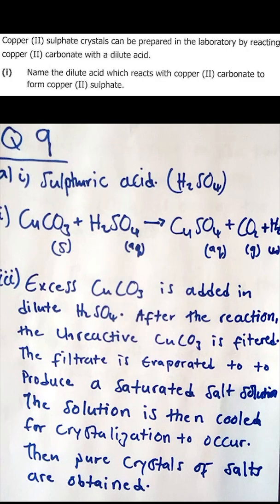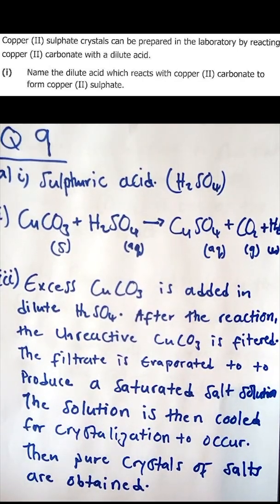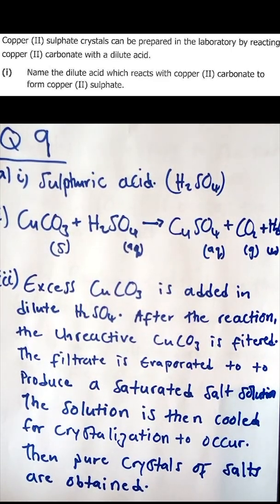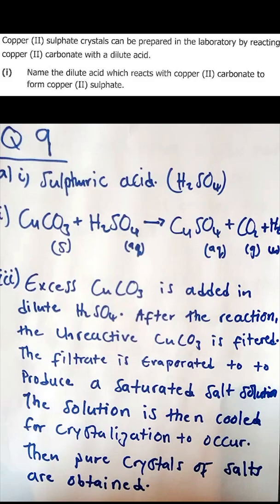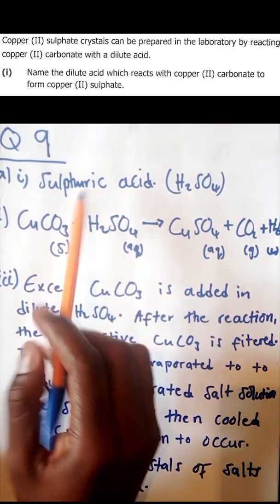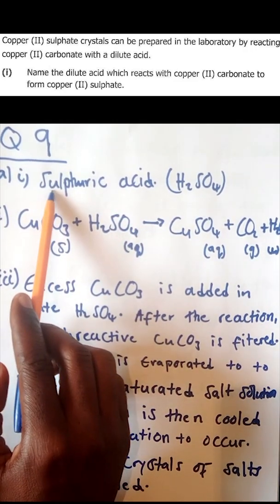Question nine is about the formation of sulfuric acid. Copper(II) sulfate crystals can be prepared in the laboratory by reacting copper(II) carbonate with a dilute acid. Name the dilute acid which reacts with copper(II) carbonate to form copper(II) sulfate. Any acid that has sulfate ions can be used to form copper(II) sulfate, and that acid is sulfuric acid.